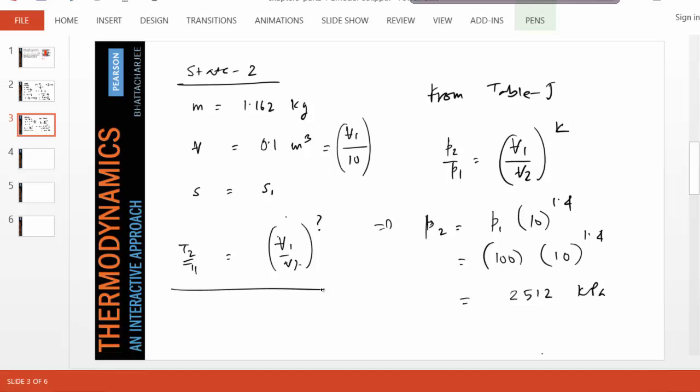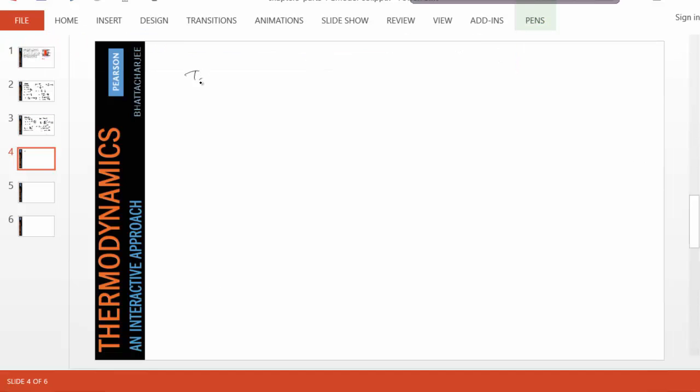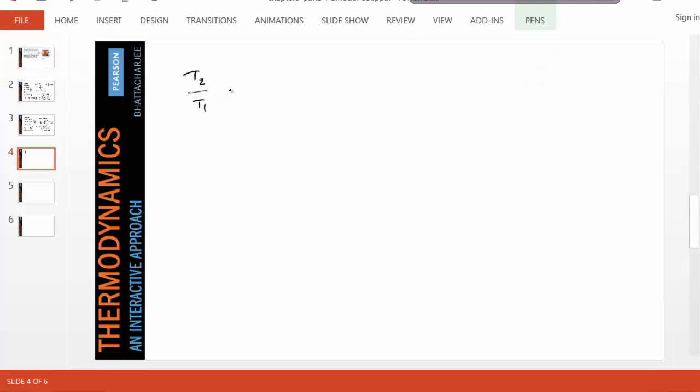It's easier now that we know what is P2 over P1, which is 10 to the 1.4, which is 25.12. So we know the ratio of pressure now. So therefore, finding the ratio of temperature should be easier. And for that, we just write down T2 over T1.